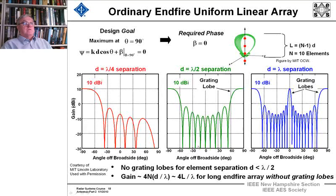And with lambda over 2, we have, we're okay, but we have a grating lobe over here at 90 degrees. And then at lambda separation, D over lambda, we have two grating lobes. So no grating lobes for elements, separation less than lambda over 2.